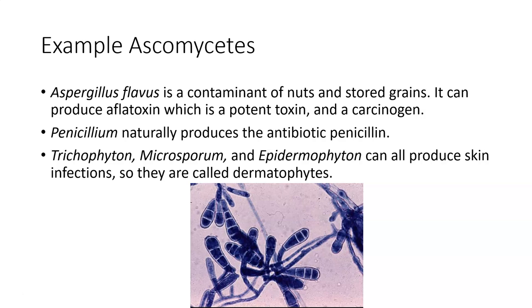Aflatoxin specifically damages the liver — it's also a carcinogen. So if you survive the liver damage, it's probably going to give you cancer later on. You don't want to play around with Aspergillus. Make sure you're always paying attention to recalls on your pet foods.